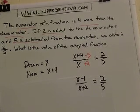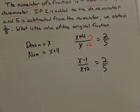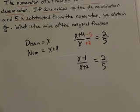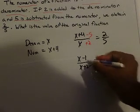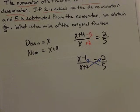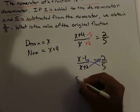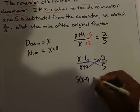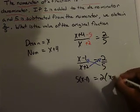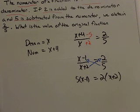And then what can I do here? Well, I can cross-multiply, so I'm going to multiply the five times x minus one and the two times x plus two. So five times x minus one is equal to two times x plus two.